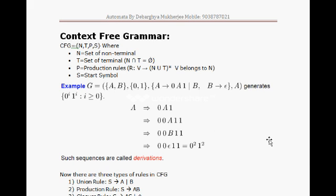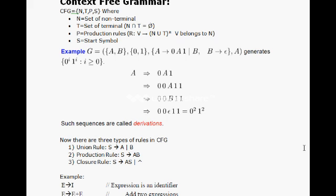There are basically three types of rules available for any CFG: first is the union rule, where A → a | b, meaning any terminal or non-terminal can appear; second is the production rule, where A → ab (concatenation); and third is the closure rule, where A → a* (repetition).